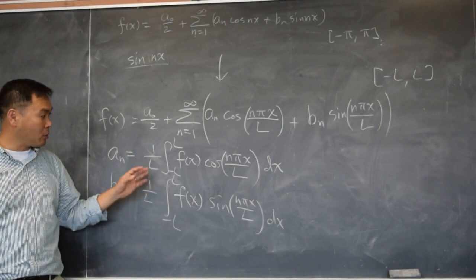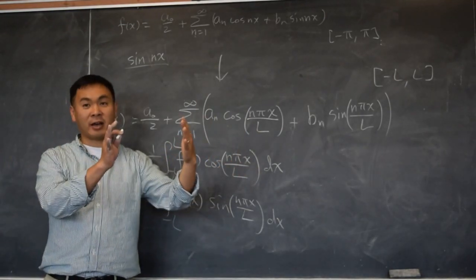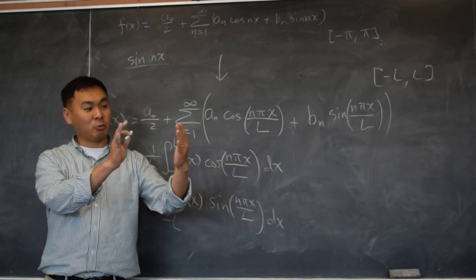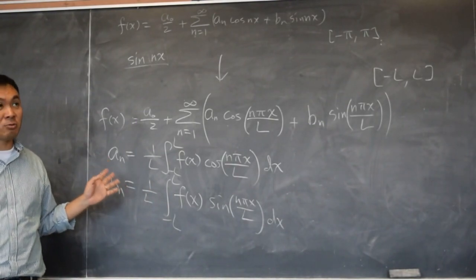But this one now, somehow we scaled everything. We shrunk by 1 over pi, and we expanded by L so that now we have a formula from negative L to L. So that's the new formula.